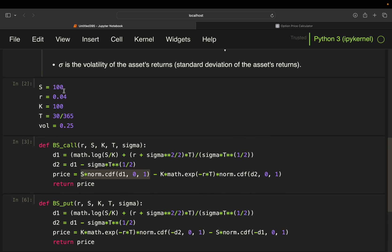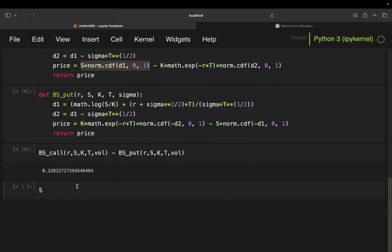Then, S is the current stock price minus strike price discounted. So, we can just take math exp here for the Euler's number to the power of R times T.